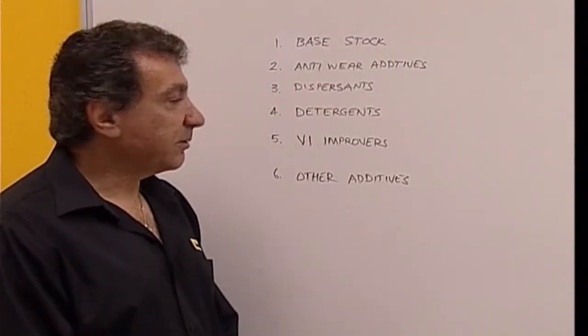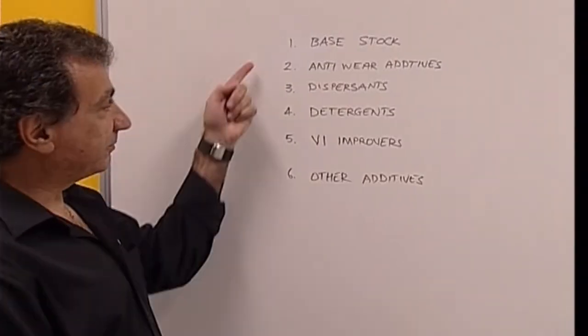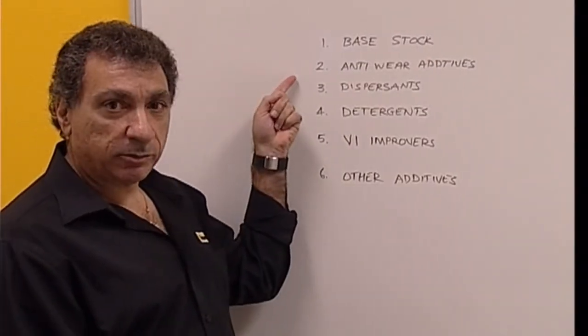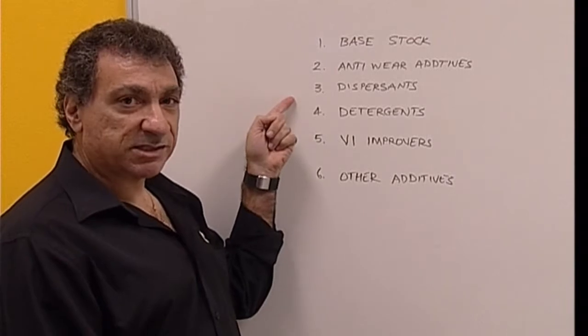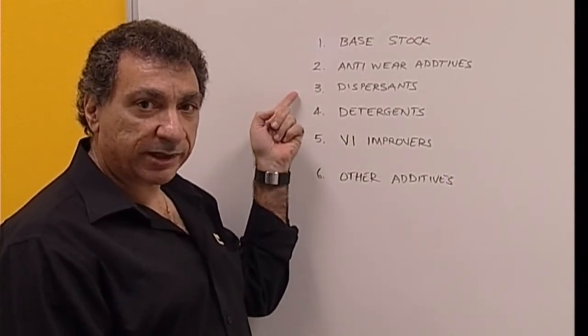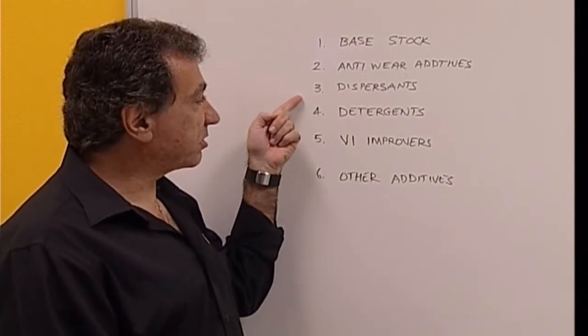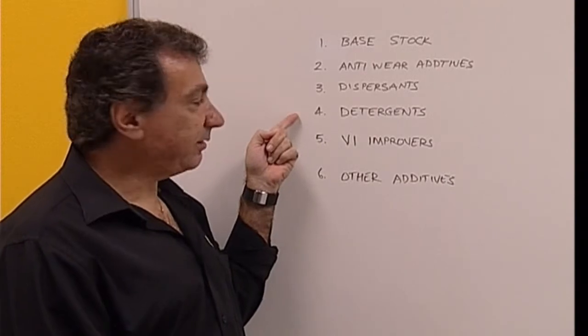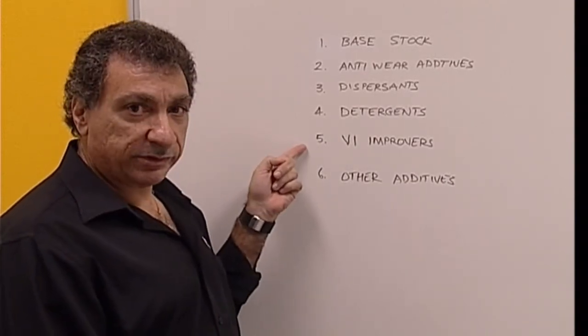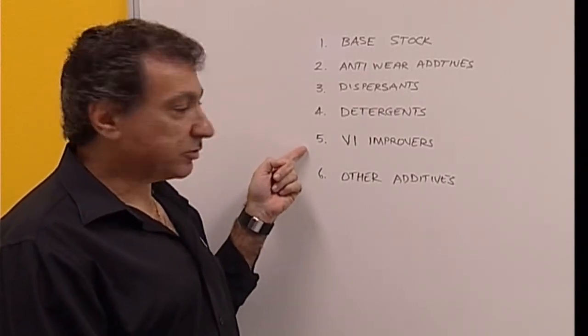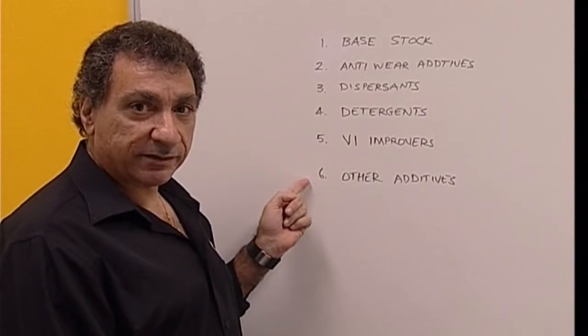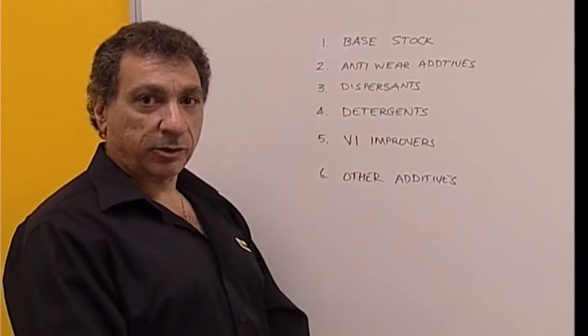So actually, what is the typical composition of an engine oil? Typically you'll have your base stock, then they'll add anti-wear additives, dispersants to keep all the by-products and contaminants in suspension, detergents to keep the engine clean, VI improvers to keep the viscosities where they should be, and a whole bunch of other additives such as corrosion inhibitors.